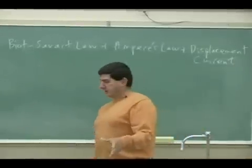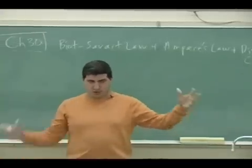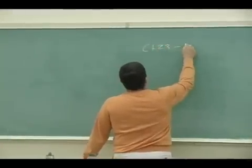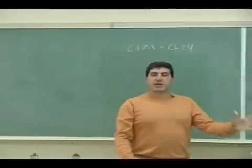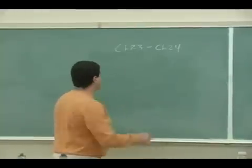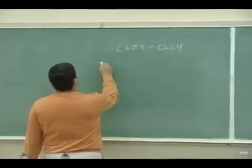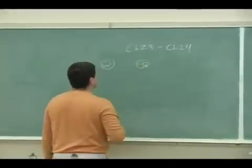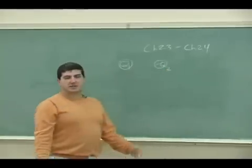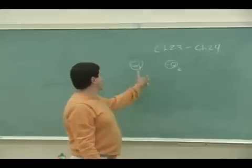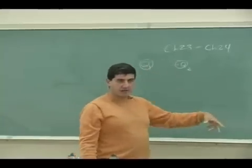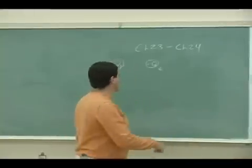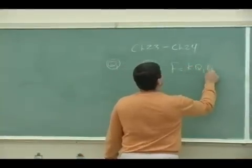Now if you remember, let me go back to what we did in the past so you can see the connection. When we talked about Chapter 23 and Chapter 24, way back when we first started the semester, we began with the two charges. When you have two charges, they could either be both positive, both negative, or opposite charge. What do they do to each other? They attract or repel each other. So the first thing we talked about is k q1 q2 over r squared, the force of attraction or repulsion.